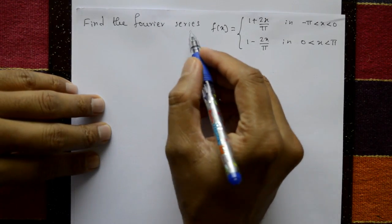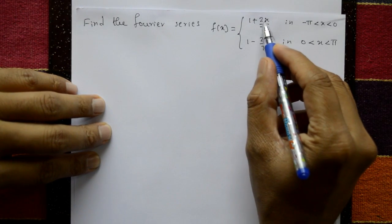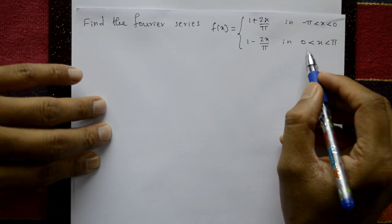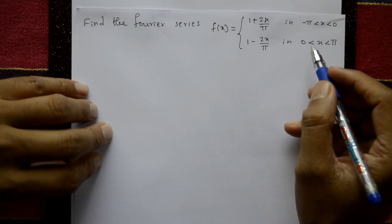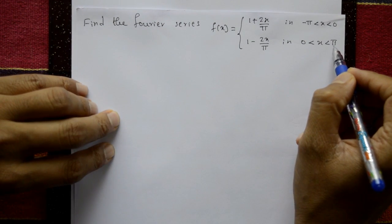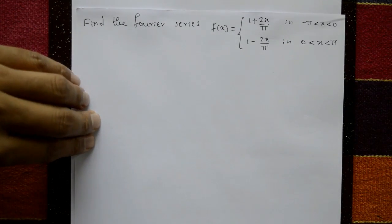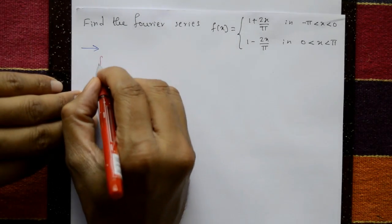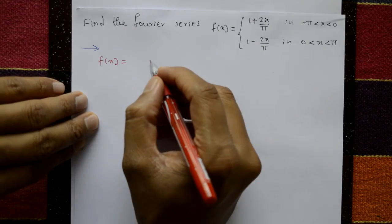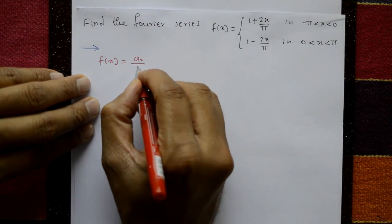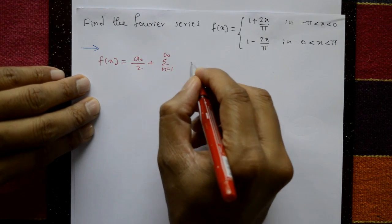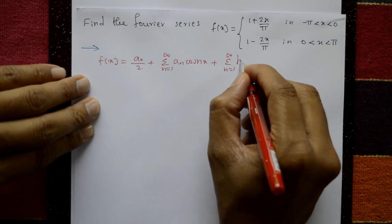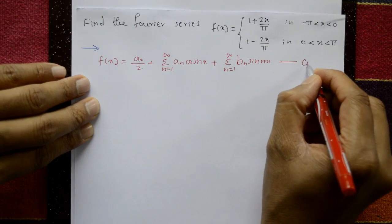Find the Fourier series for the piecewise function: f(x) = 1 + 2x/5 for −5 < x < 0, and f(x) = 1 − 2x/5 for 0 < x < 5. The period is from −5 to +5. This is a discontinuous function. The Fourier series formula is f(x) = a₀/2 + Σ aₙcos(nx) + Σ bₙsin(nx), equation 1.